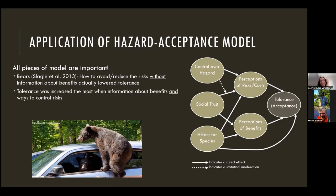Tolerance was increased the most when information about benefits and ways to control the risks were presented together. So we shouldn't just tell people about all the coexistence work they can do without also putting the benefits of beavers into that message. Not just talking about benefits, but talking about the benefits of beavers and the ways to control the risks — whatever those risks may be for the specific audience.